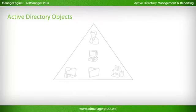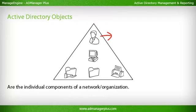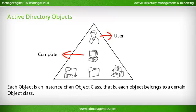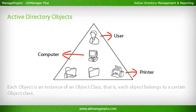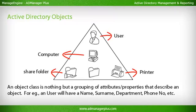Active Directory Objects are the individual components of a network organization. Each object is an instance of an object class — that is, each object belongs to a certain object class. An object class is a grouping of attributes and properties that describe an object. For example, a user will have a name, surname, department, phone number, etc.